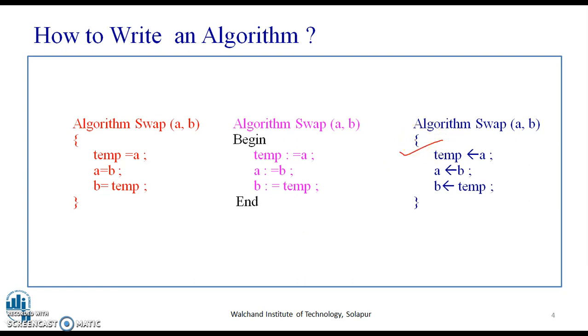However, here begin and end is replaced by curly bracket, and the assignment operator is replaced by arrow operator. If you notice, the same algorithm is being written in three different ways. What we want to convey here is there is no specific syntax for writing the algorithm. The algorithm has to be written in a way that is understood by the programmer and the person who is going to use it. As long as you use conventions which are understood by both of them, the algorithm is fine.